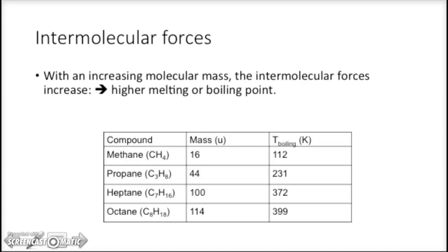Let's look at the following table. Methane, propane, heptane, octane. The mass goes from 16 to 44 to 114. And this is the boiling point. As we can see, increasing molar mass results in increase of the boiling temperature. So, increasing molar mass, the intermolecular forces increase. Higher melting boiling point.